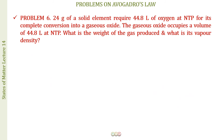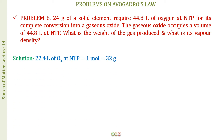The final question before I conclude this lecture: 24 g of a solid element requires 44.8 liters of oxygen at NTP for its complete conversion into a gaseous oxide. The gaseous oxide occupies 44.8 liters at NTP. Find the weight of the gas produced and its vapor density.